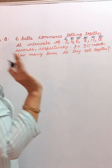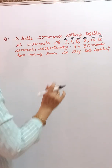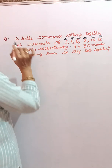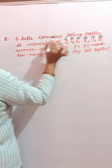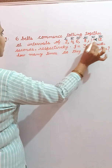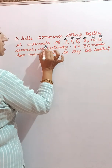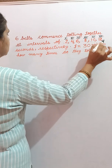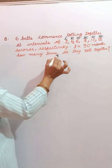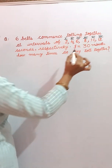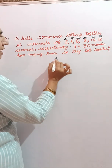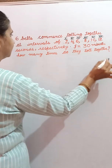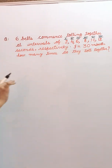Hello guys, welcome back to my channel. Today our question is: six bells commence tolling together at intervals of two, four, six, eight, ten, and twelve seconds respectively. In 30 minutes, how many times do they toll together?